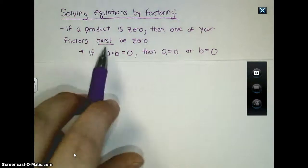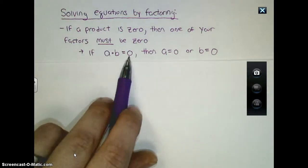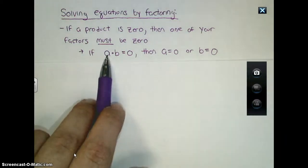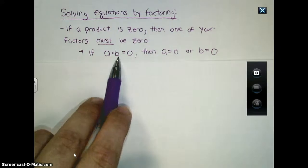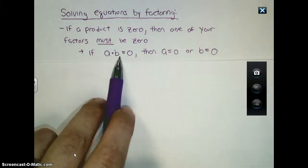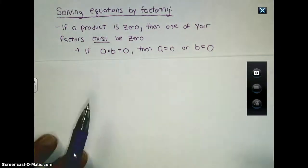So in the statement here, if a times b is equal to zero, either a has to be zero or b has to be zero. Now technically both of those could be zero, but we're going to focus on the or idea here in our problems.